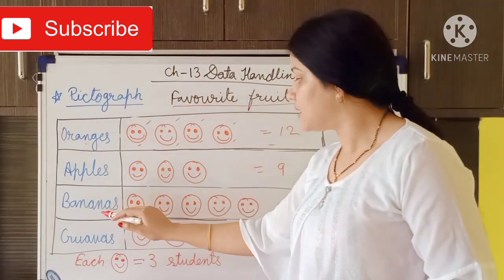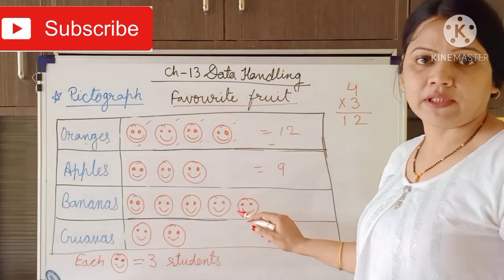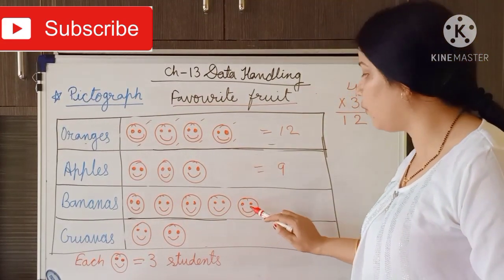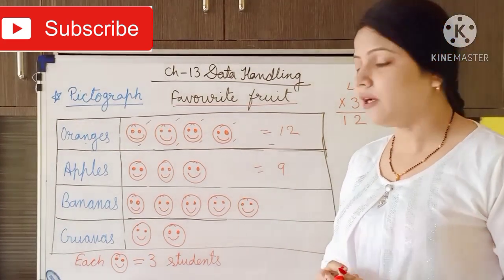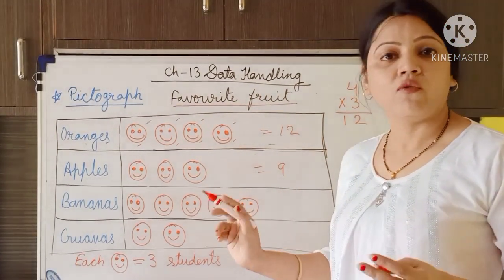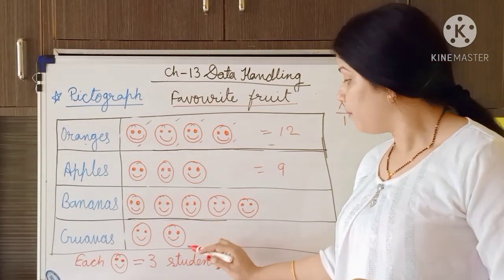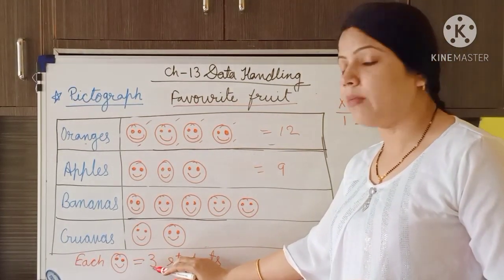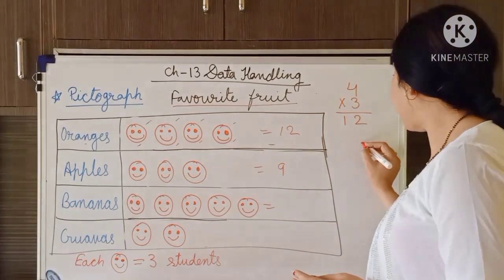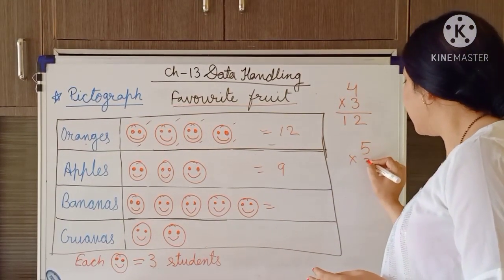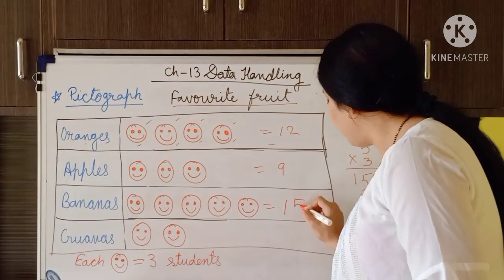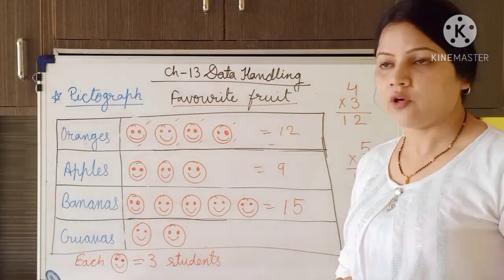Now for bananas — bananas are liked by these people. How many smileys are there? One, two, three, four, five — five smileys are there. We have to multiply five by three, and five multiplied by three gives us fifteen. So bananas are liked by fifteen students.